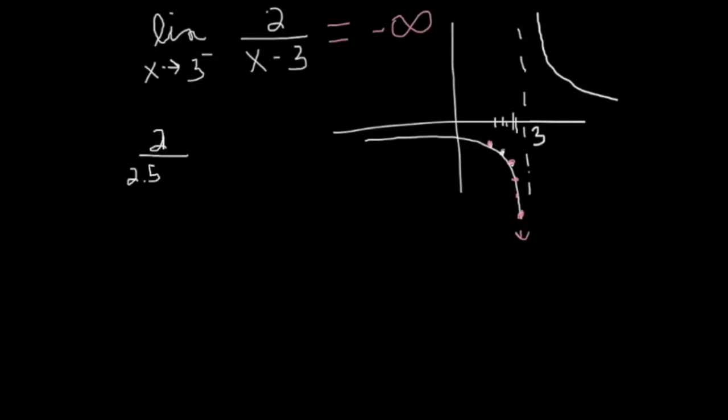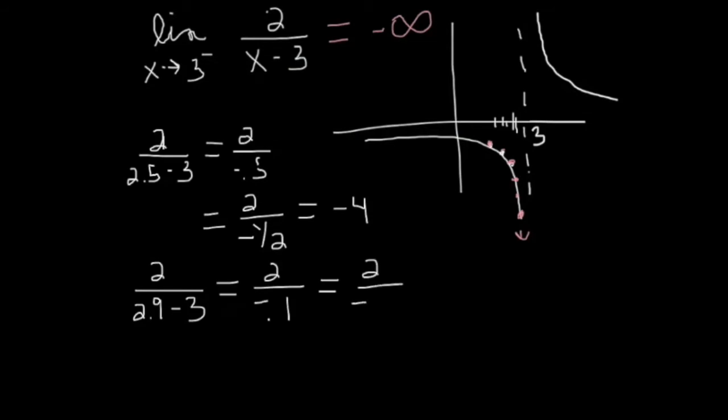2.5. That's definitely to the left of 3. I get negative a half in the denominator. Flip it upside down. Multiply the 2 and the 2. And I get minus 4. If I do another one, 2 divided by 2.9. Notice that that is also to the left of 3, but closer to 3 than 2.5. 2 divided by negative 1 tenth. Flip it over. Multiply by 2. I'm getting 20 here.